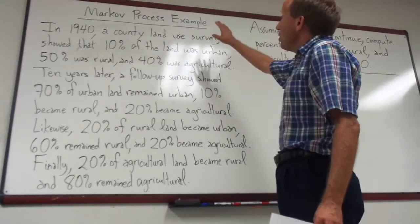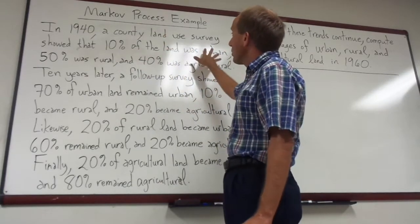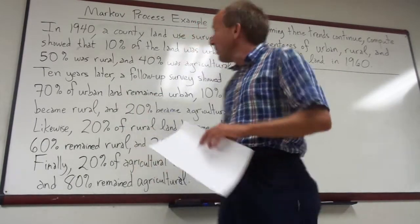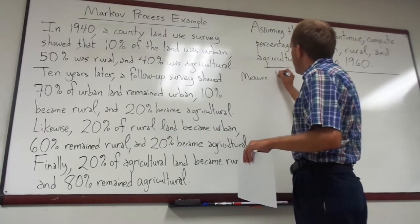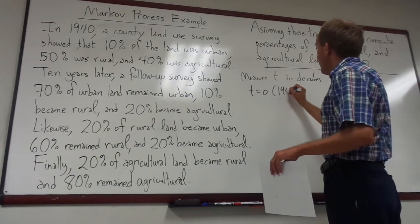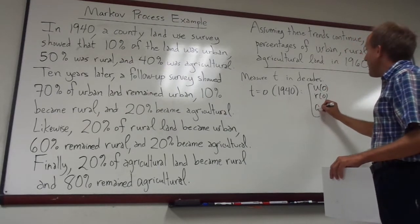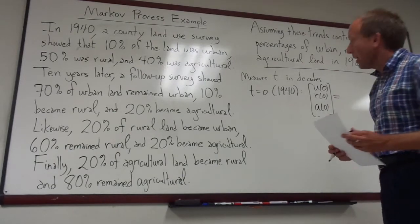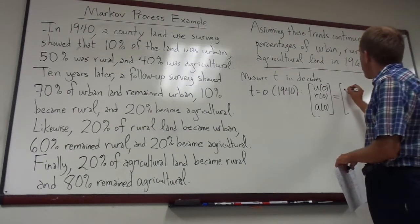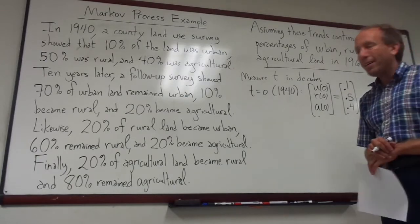We're looking at a land usage situation. In 1940, 10% of all the land in a particular county was urban, 50% was rural, and 40% was agricultural. I'm going to measure time in decades. So at T equals 0, which is 1940, we have U(0), R(0), and A(0), which are 0.1, 0.5, and 0.4 respectively — obviously this adds up to 100% of the land.